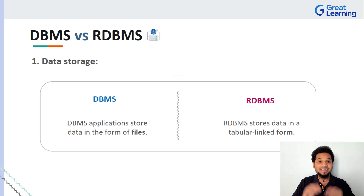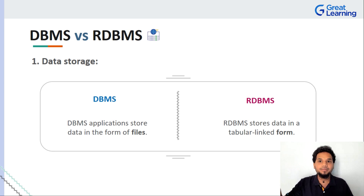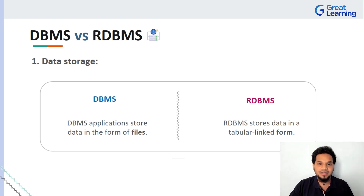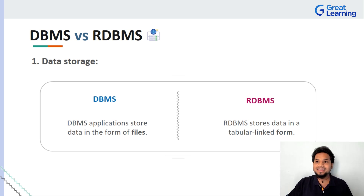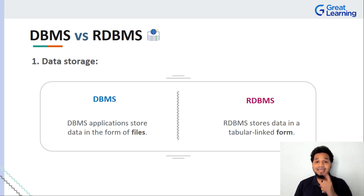Coming to the RDBMS side of things, the data is not stored in the form of individual files but in the form of a table. You might have seen databases with multiple tables, and these tables have a connection where they can be linked with each other to add more functionality or convenience. The use of primary key, secondary key, and so on allows us to link two tables or two data elements together and perform any operations we require.